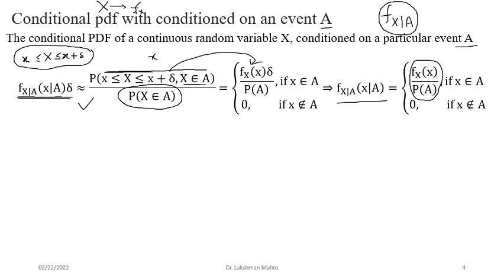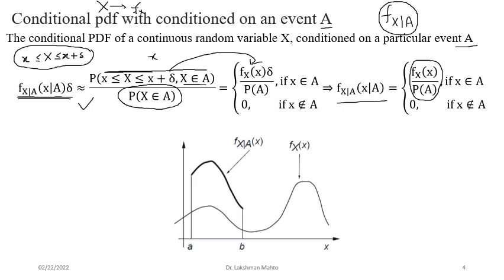Regarding characterization of conditional PDF of X given A: the probability of A is a fixed constant since A is already decided. The shape of the conditional PDF is completely characterized by the shape of the marginal PDF of X. Graphically, suppose this is the marginal density of X. Once we know event A — that X observes value between a to b — the conditional density f(x|A) is non-zero only between a and b.